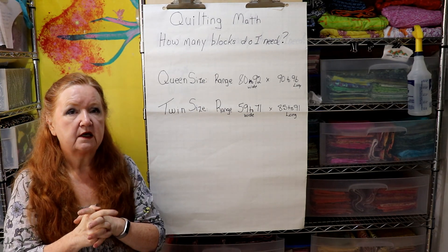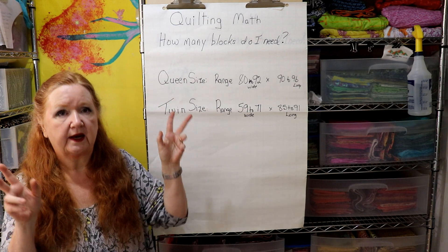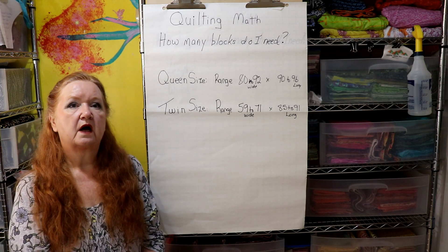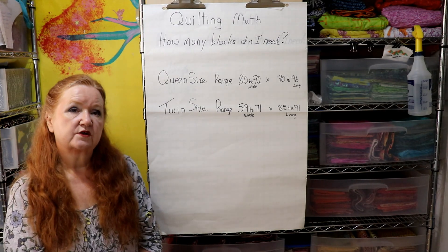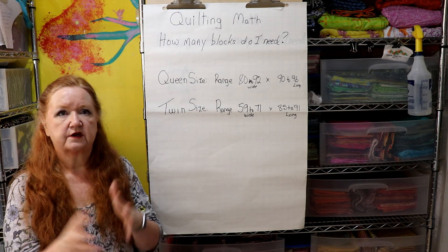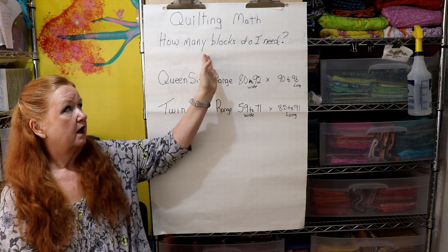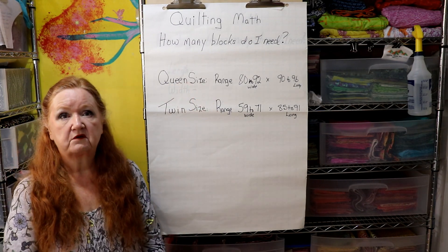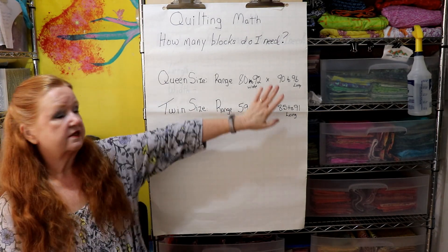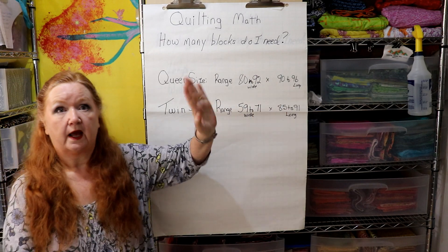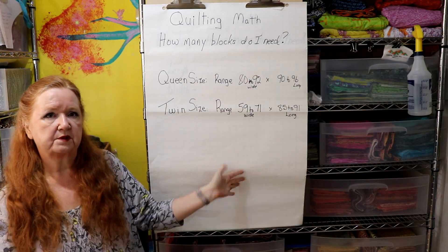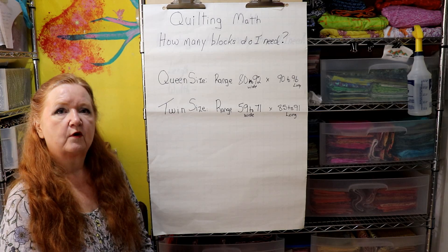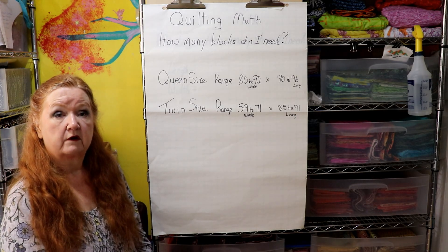How many blocks you need depends on the size of your block and what size it will be finished within the quilt. In the last lesson we talked about finished and unfinished sizes. The fastest way to figure this out: start with the finished size of your block — let's say a 12-inch finished block. We're not putting borders on it for now, as that makes the calculation more complex. The bigger you make a quilt, the more fabric you use up — and the better chance you have of conquering your scrap pile.